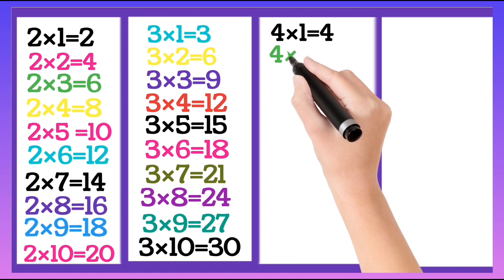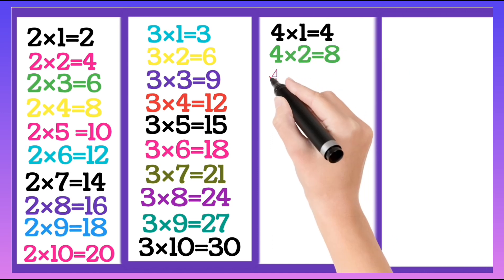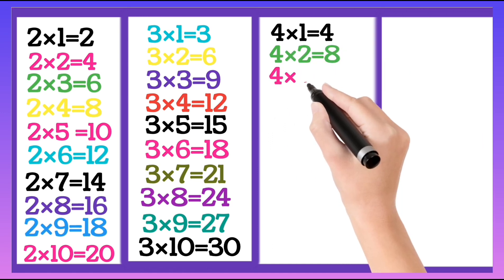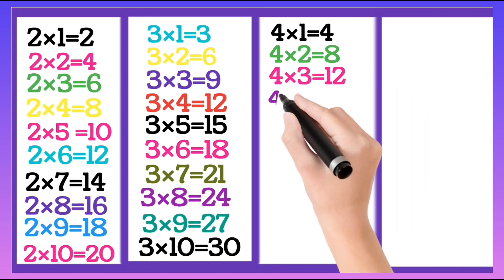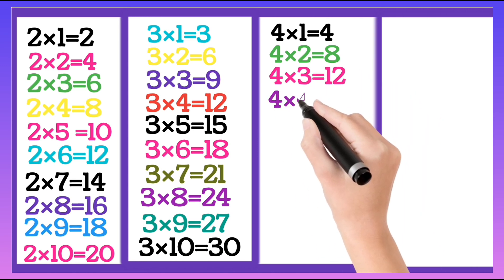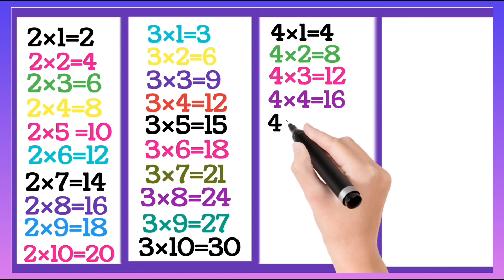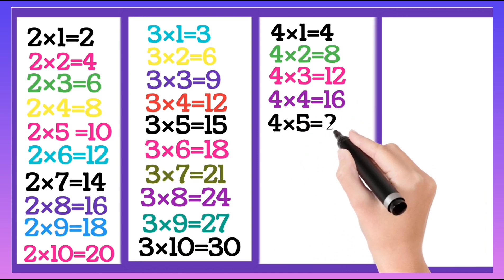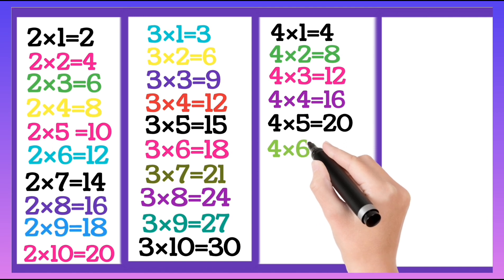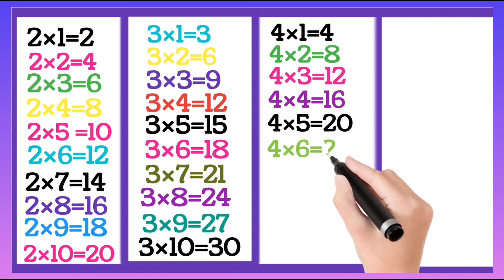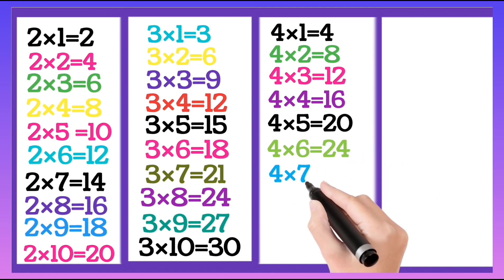Four 1's are 4, four 2's are 8, four 3's are 12, four 4's are 16, four 5's are 20, four 6's are 24.